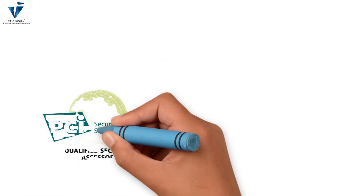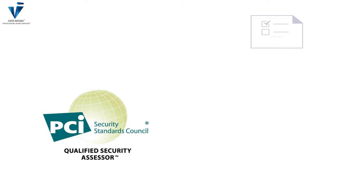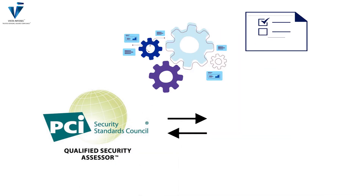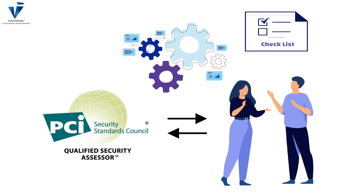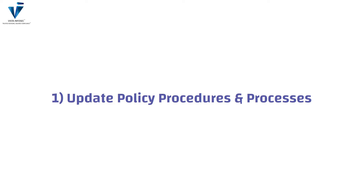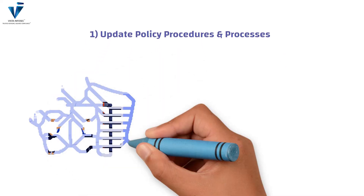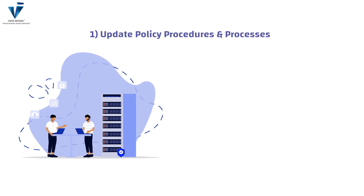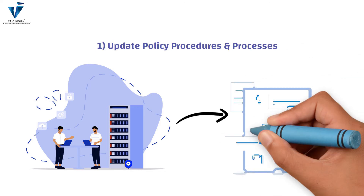Prior to engaging with PCI qualified security assessors, it is essential that we ensure PCI DSS compliance checklists are followed. Here is a list that you must check off before undergoing an audit. The first item is to update company policies, procedures, and processes. Before diving into the assessment stage, organizations must review and update their policies, procedures, and processes to meet the compliance requirements.